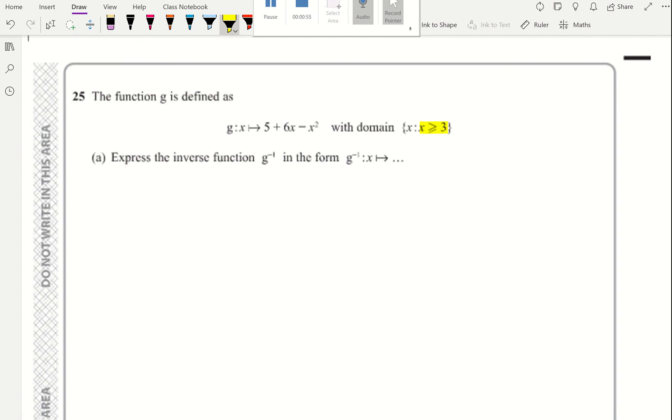Express the inverse function. Usually when you are doing inverse function, you put the equation y equals, so you turn it from function notation, you write it as an equation in terms of y. The first thing you do is you swap the x's and the y's together. What I would advise is that you don't do that. My advice is the first thing you do, you complete the square.